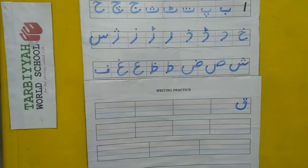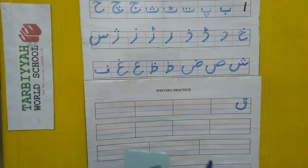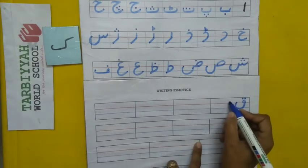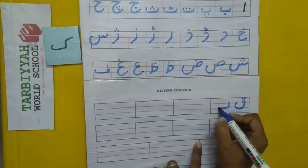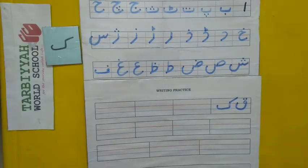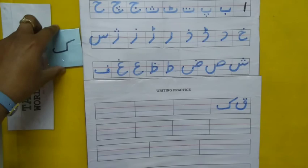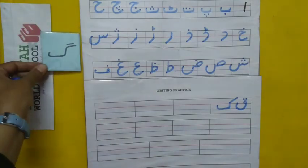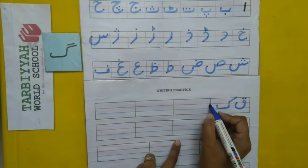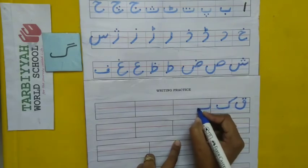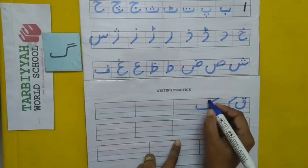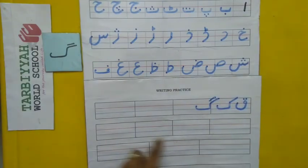The next letter after Kaaf — yes, Kaaf (the second Kaaf/Kaf). So how do we write this Kaf? One standing line, one sleeping line, one curve, and one slanting line. And then after this Kaf, the next letter is Gaaf. So how do we write Gaaf? One standing line, one sleeping line, one curve, and two slanting lines. Gaaf.